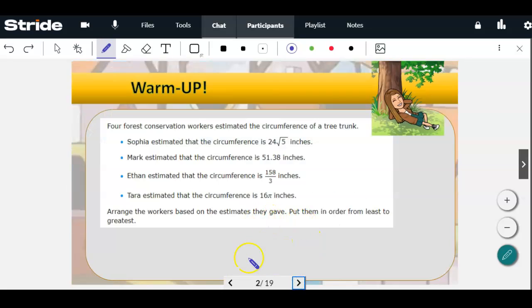Four forest conservation workers estimated the circumference of a tree trunk. Sophie estimated the circumference to be 24 square root of 5 inches, Mark estimated the circumference to be 51.38, Ethan estimated the circumference is 158 over 3, and Tara estimated the circumference is 16 pi. The question here is arrange the workers based on the estimates they gave, put them in order from least to greatest.